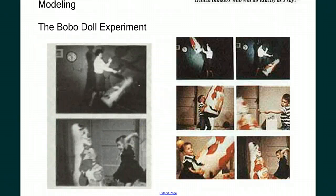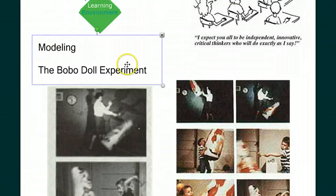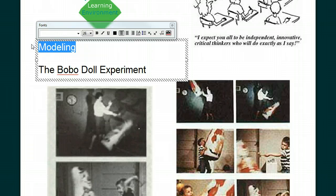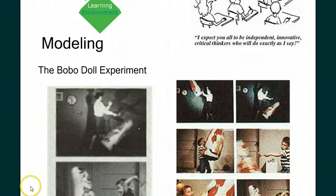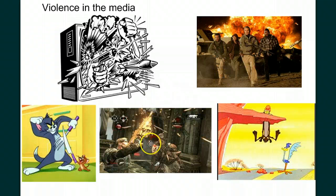What are the implications of this understanding? One of the things it shows us is the importance of the concept of modeling. Whether we're an older brother or sister, a parent, a teacher, or a boss, we need to model the behavior we'd like people to do. Especially for children — they see and hear everything. We also need to be aware of what media our children are seeing. Are violent TV shows, movies, and video games likely to make children more violent?